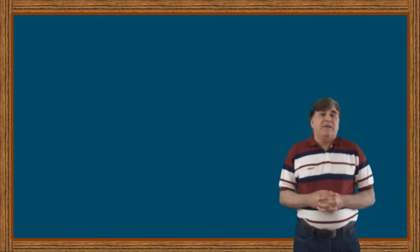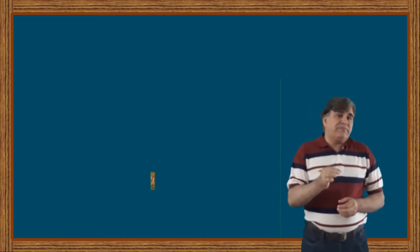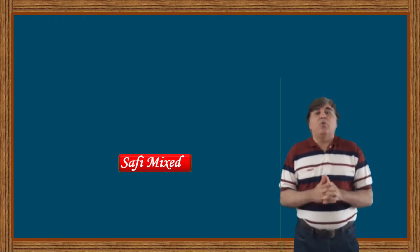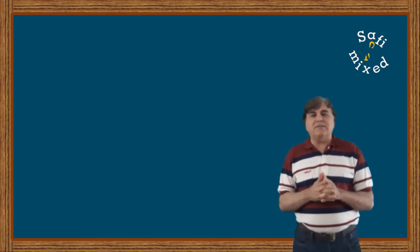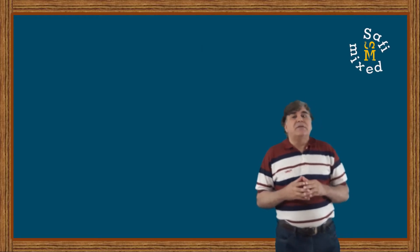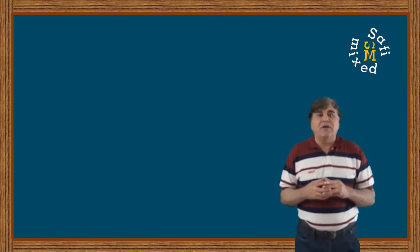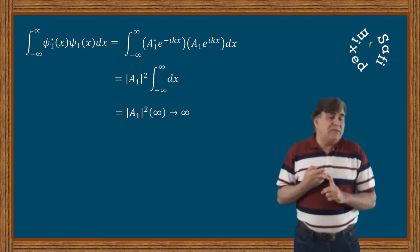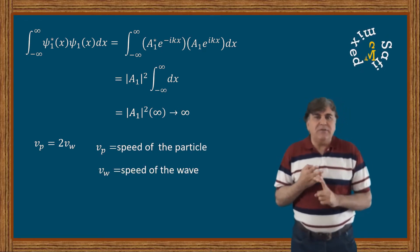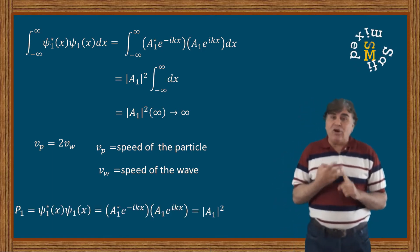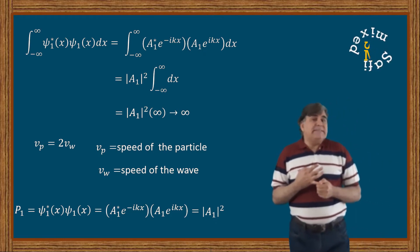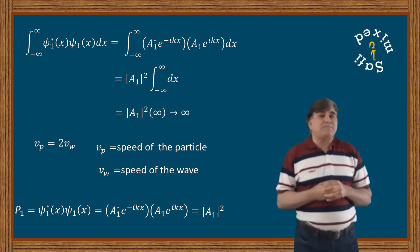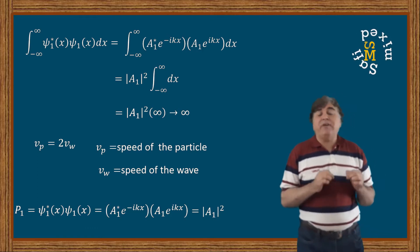Welcome to Safi Maxed. In this video I will continue from where I left off. In the first part on free particles, we saw that there are three grave issues with the wave functions of a free particle: number one, the wave function is not normalizable; the speed of the particle does not agree with the speed of the wave; and number three, the probability density of the wave function is a constant — independent of the position and time of observation.